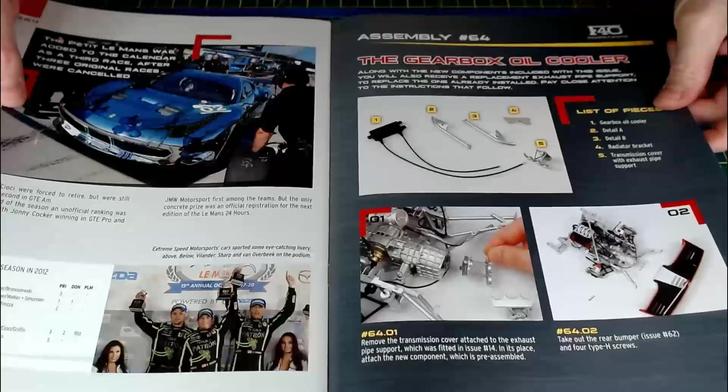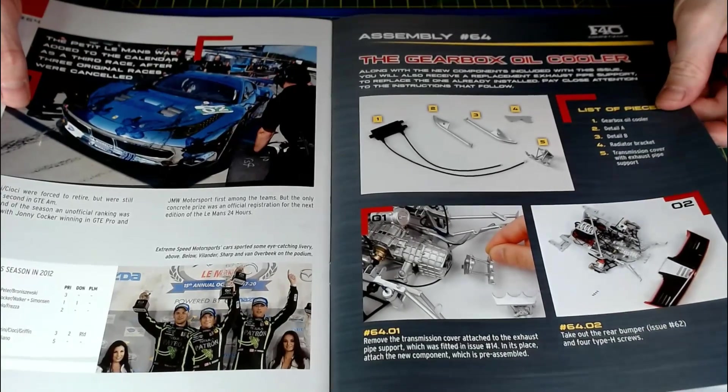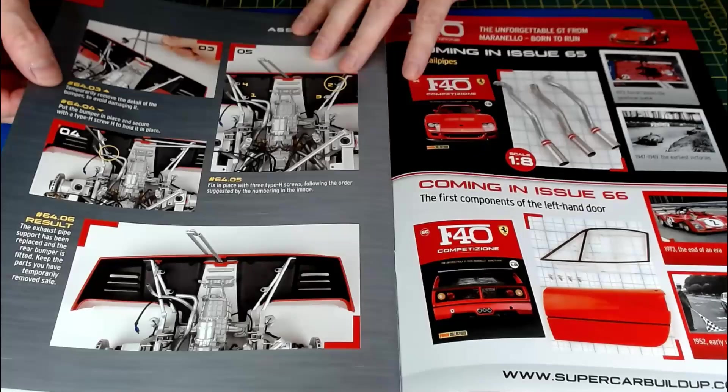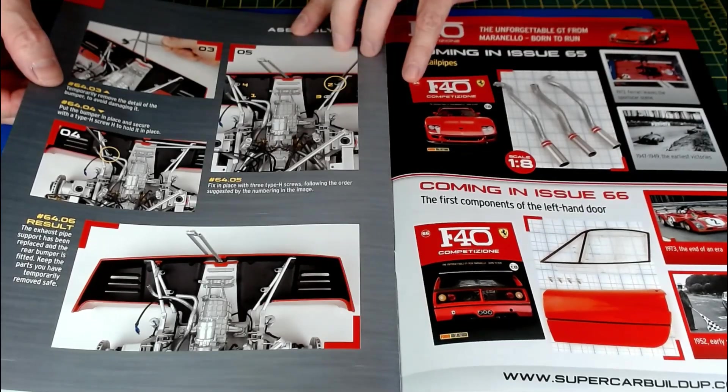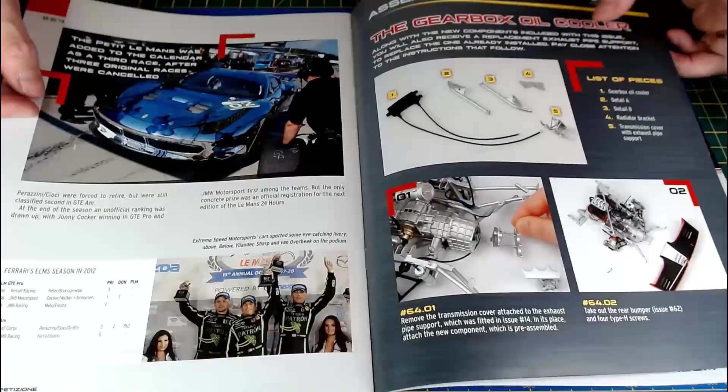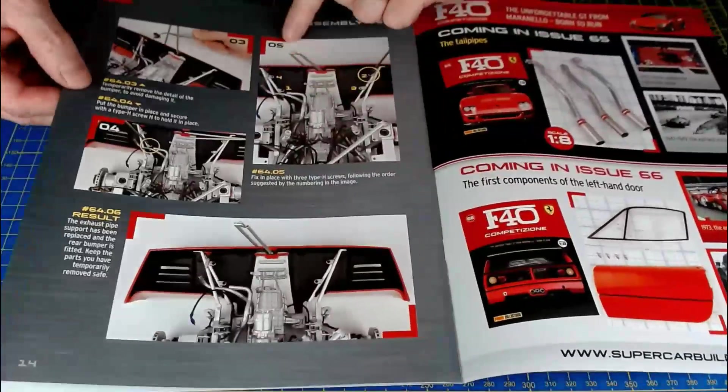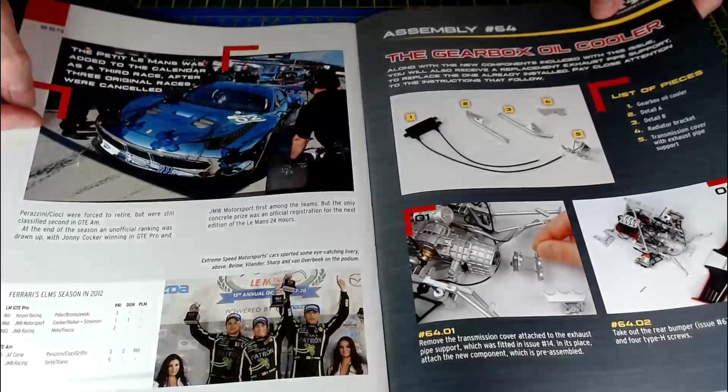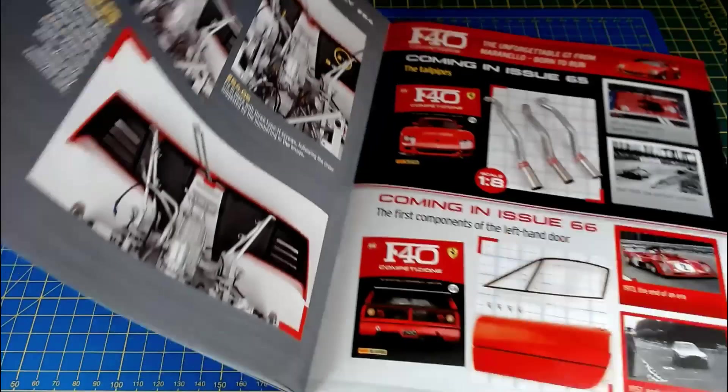What we're doing is the gearbox oil cooler. Okay, so we're going to look... it's not going to be fitting. Oh no, we're not fitting the gearbox. As always, we're not fitting actually the part we're getting. We're just going to be fitting on, looks like the bumper. Yeah, so we're not actually fitting the gearbox intercooler. We're getting the gearbox cooler, but we're not fitting it. We're just going to be fitting the rear bumper on. So that'll be 64.